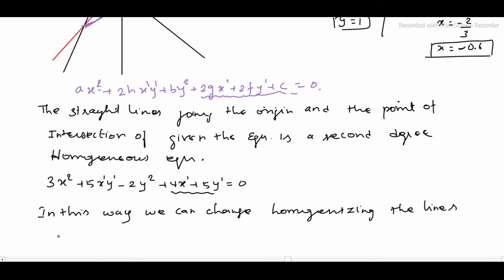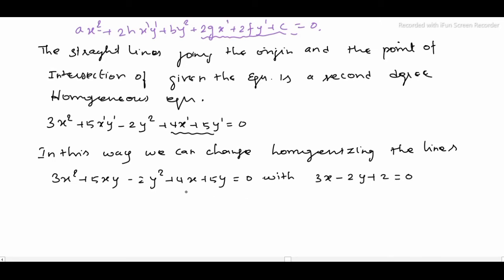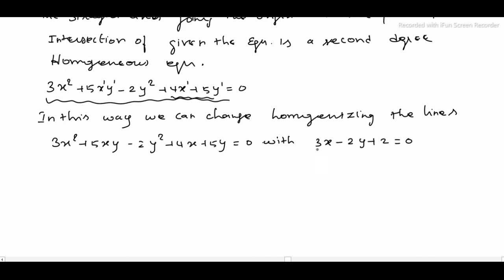So given equation, we will homogenize using the separate equation. In this way we can change the homogenization of the line equation. The lines — 3x squared plus 5xy minus 2y squared plus 4x plus 5y equals 0 — with which we will homogenize: the line equation 3x minus 2y plus 2 equals 0. That's why the power value is 2, so we change the entire equation. That's why we solve the line equation.